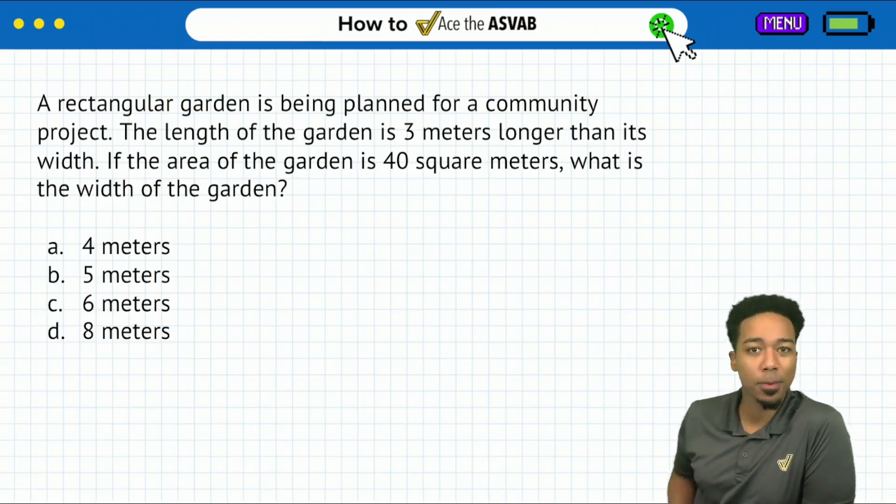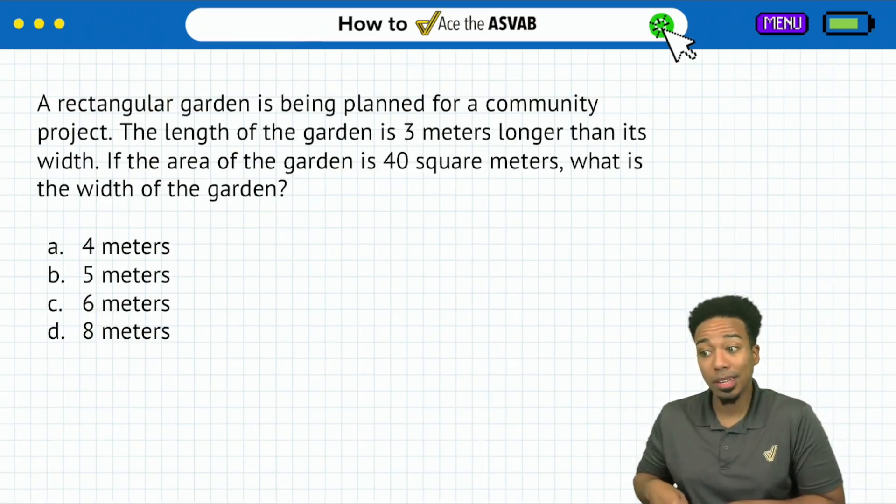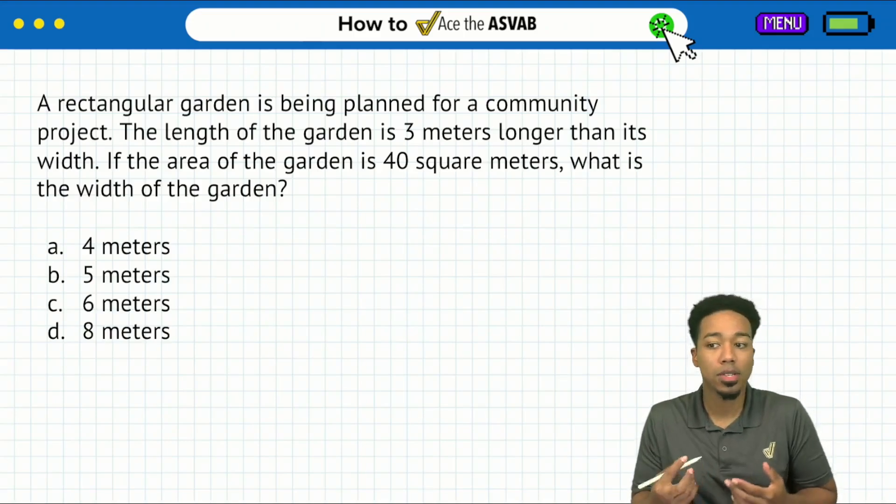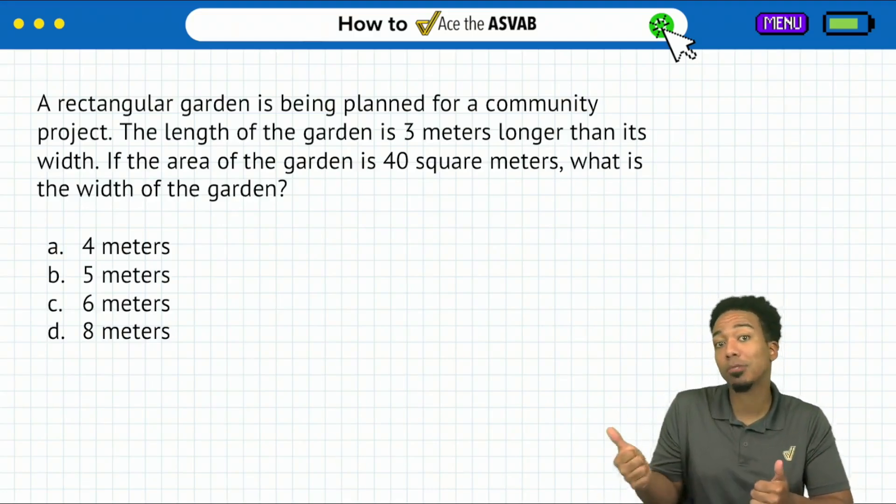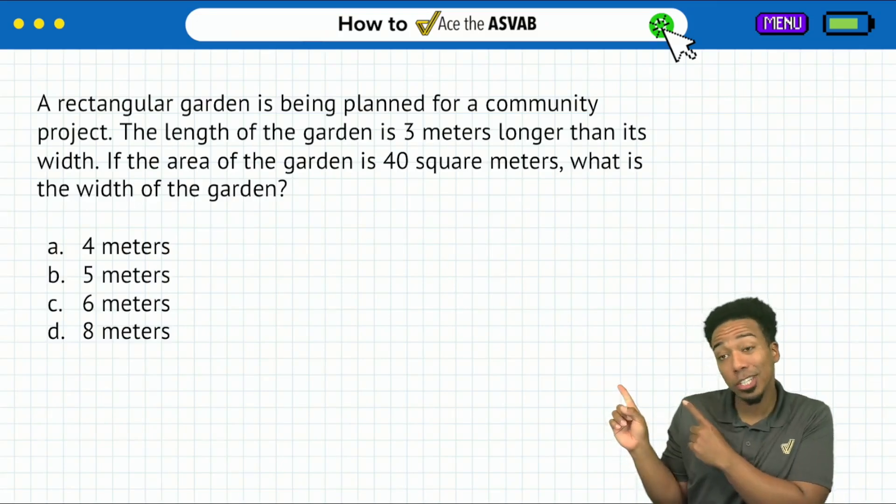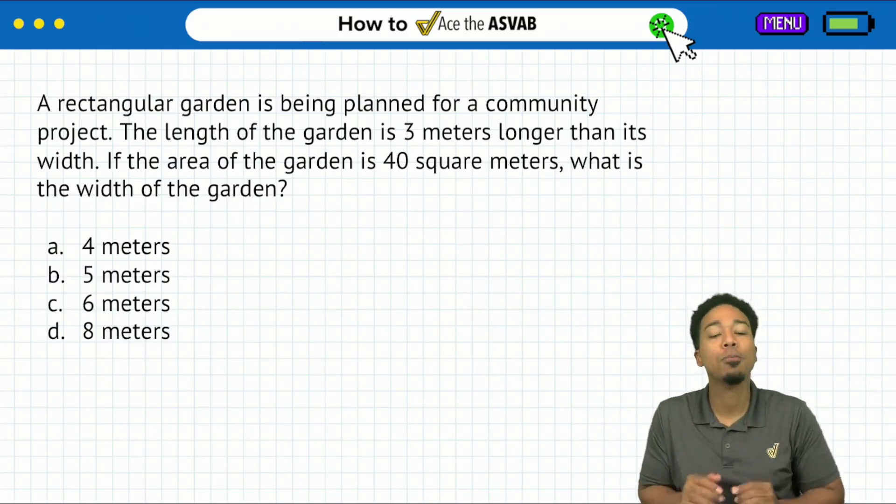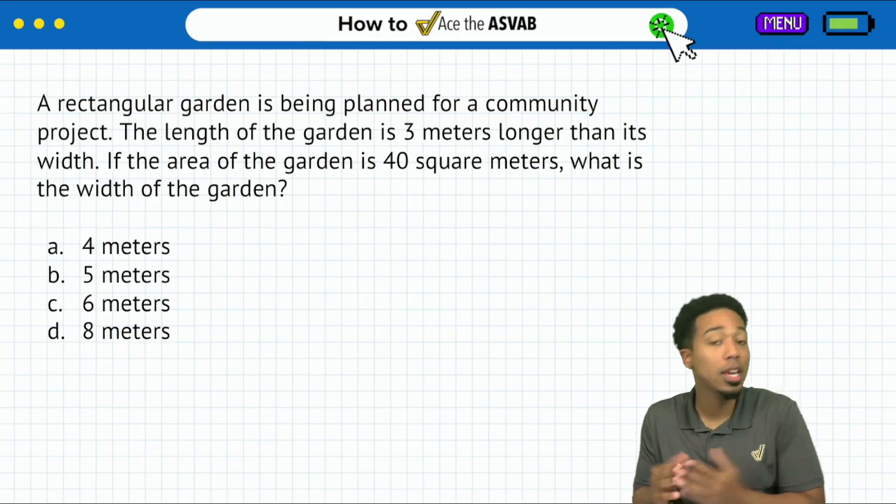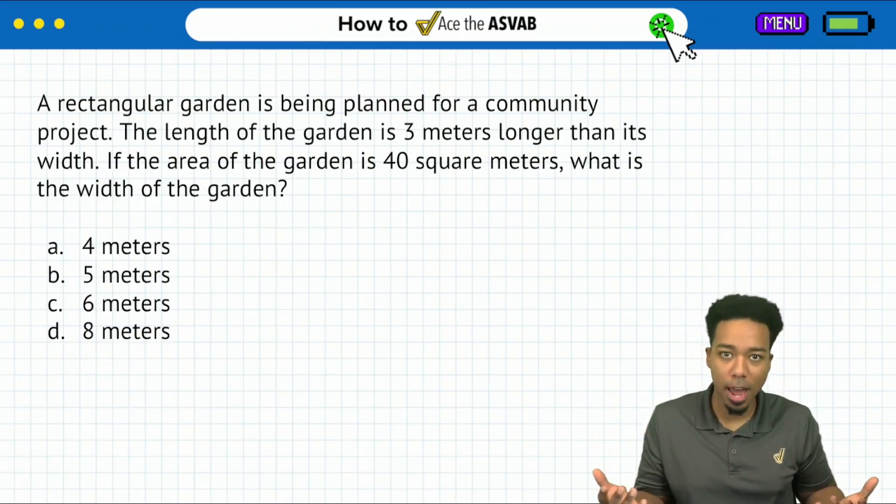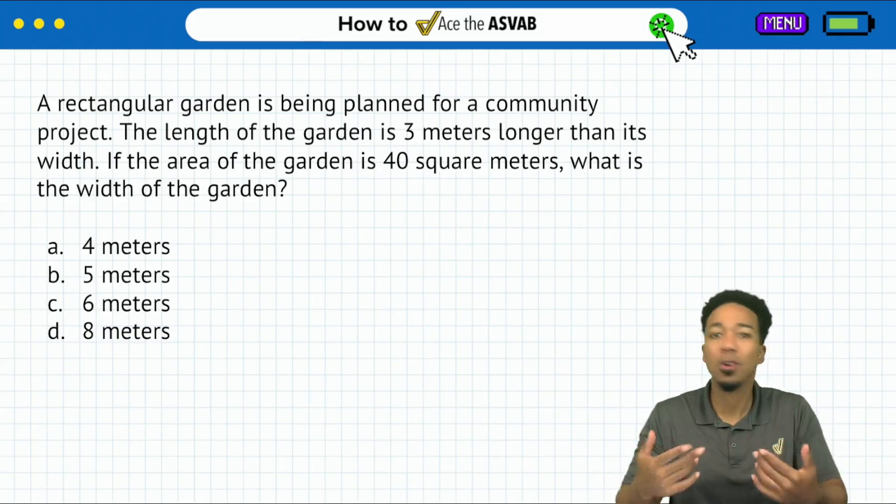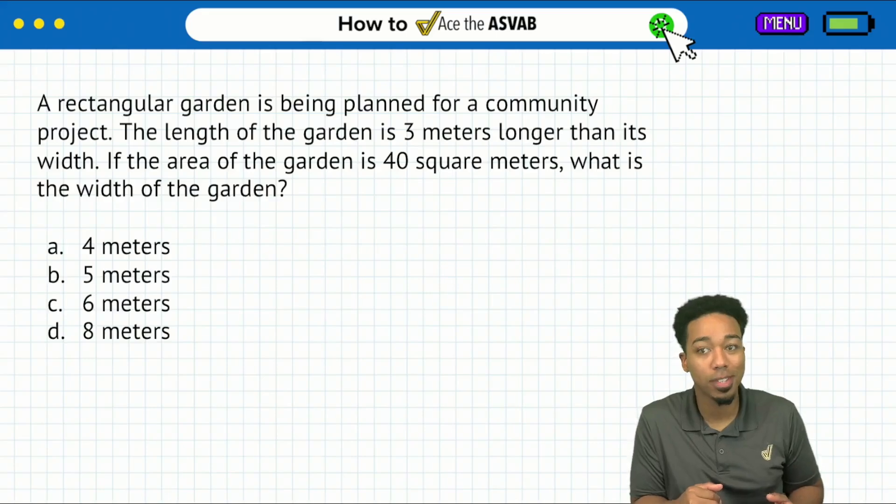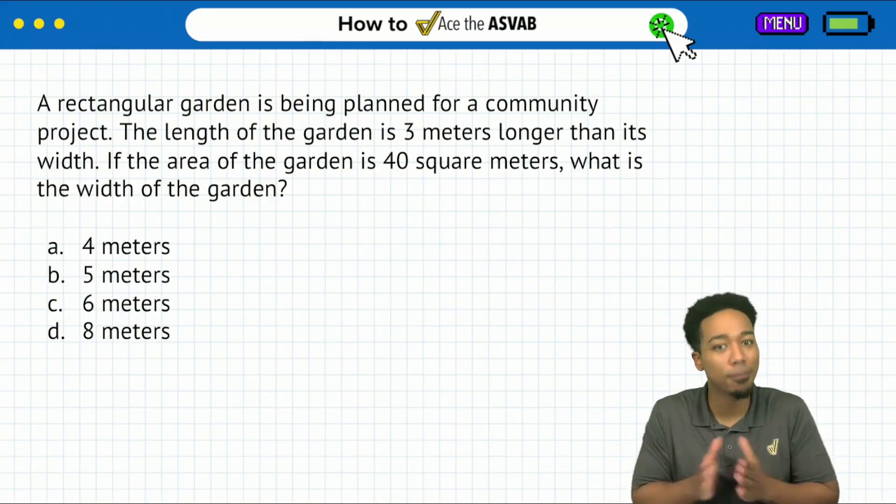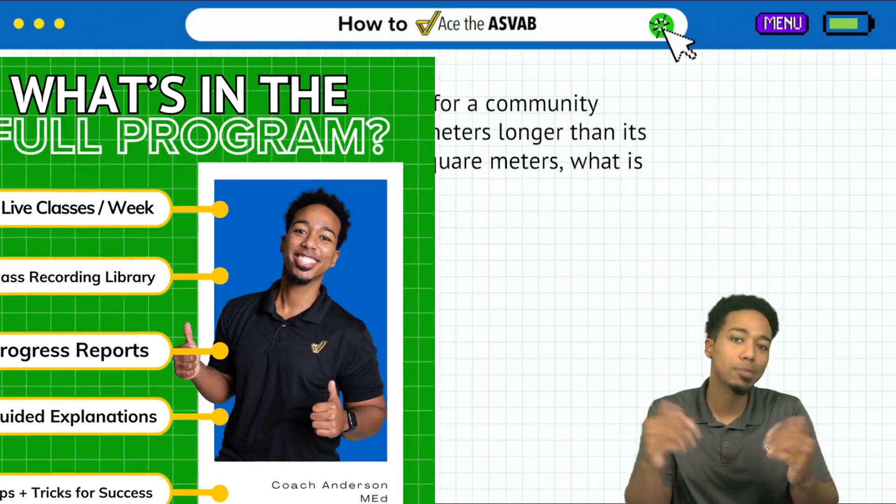In this problem here that we're going to review, it's going to be one that pretty much everybody gets wrong unless you have a pretty solid foundation when it comes to translating English to math and actually knowing principles of math knowledge, particularly polynomials. So let's go ahead and review this question and if you want to get more practice just like you see here with me going over it with you and class recordings and progress reports and all the other things that you need to feel secure to raise your score, that's my full ASVAB program.